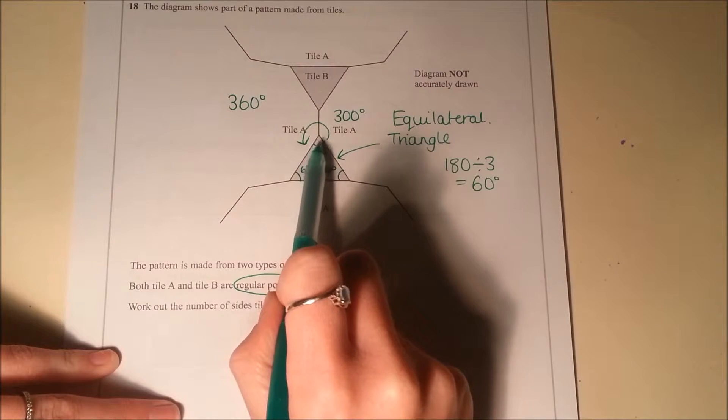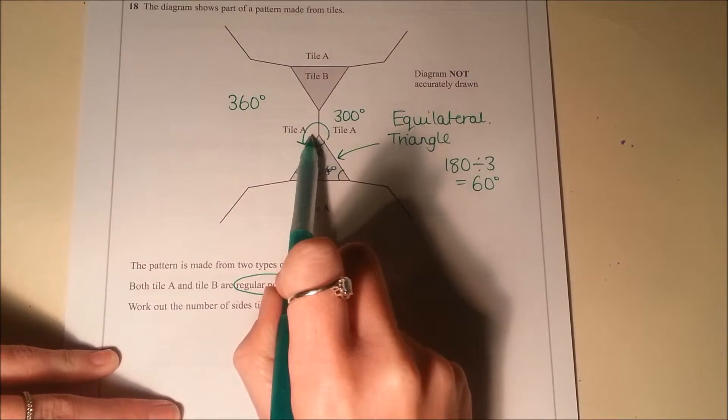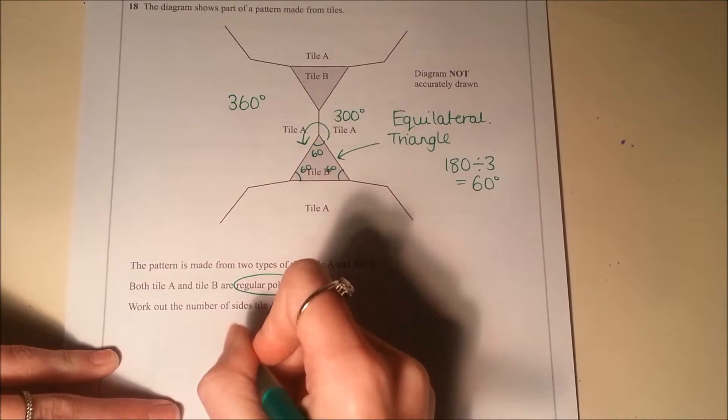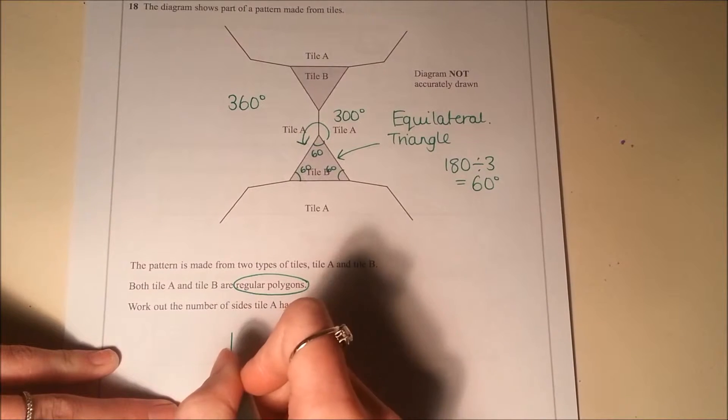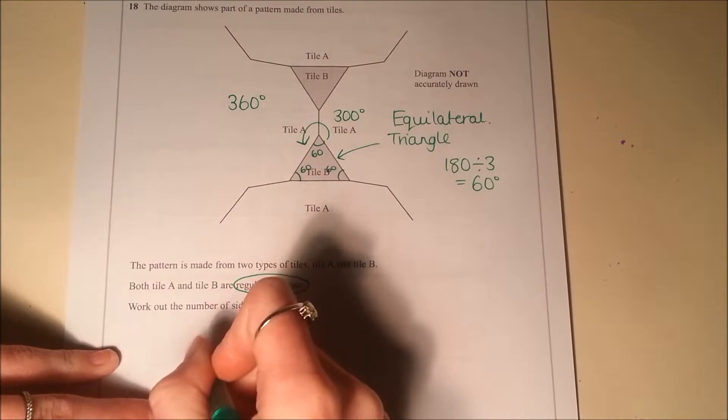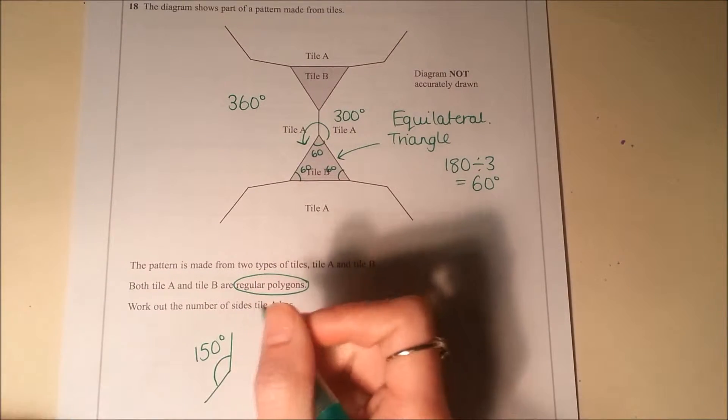And then if I look at how it's made up, it's made up of two angles out of tile A. So what that means is that one of these angles in tile A is 150 degrees.